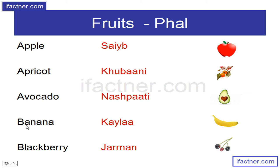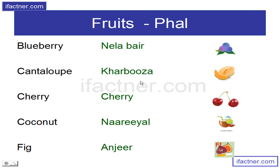Kela – Banana, B-A-N-A-N-A, Banana. German – Blackberry, B-L-A-C-K-B-E-R-R-Y, Blackberry. Neelabeer – Blueberry, B-L-U-E-B-E-R-R-Y, Blueberry. Kharboosah – Cantaloupe, Cantaloupe. Nariel – Coconut, C-O-C-O-N-U-T, Coconut.